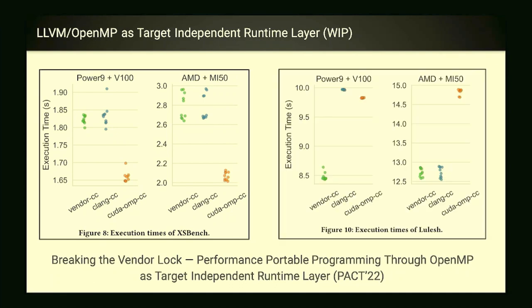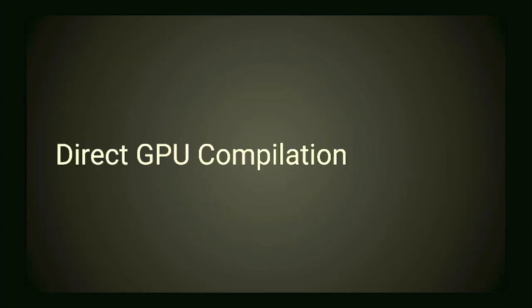On Lulesh, we're on par with Clang on the NVIDIA side — that's what you'd expect. On the AMD side, we were slower at the time of the experiments because we didn't yet have stream support (asynchronous offloading) for AMD. That has since been resolved, so we've caught up. The NVIDIA side already had stream support, which is why it worked there but not on AMD — but that was just an artifact.